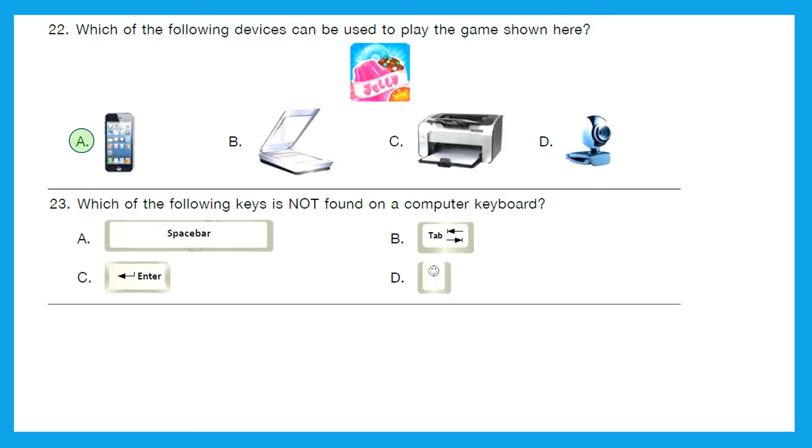Question 23: Which of the following can be considered as a handheld computer which we can carry anywhere? A tablet - that's right. B desktop - no. C mainframe - no. D super - no. So the right answer is A, tablets.